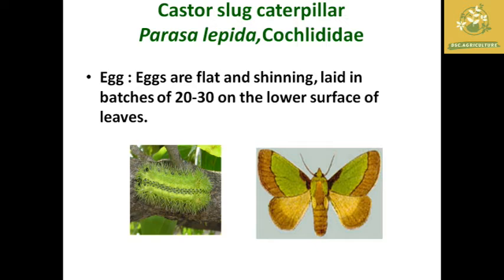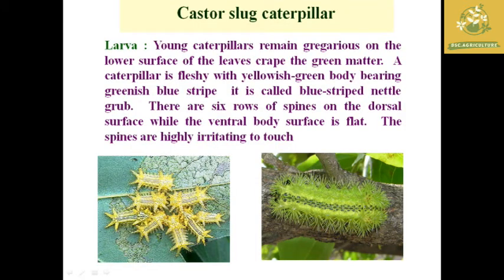Next is the castor slug caterpillar, scientific name Parasa Lepida, family Cochilidae. The eggs are large and shiny, laid in batches of 20–30 on the leaf surface. The larva has a special characteristic — its spines contain a chemical fluid that causes irritation to the human body. The larva is greenish to yellowish-green in color.